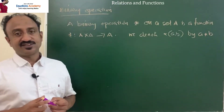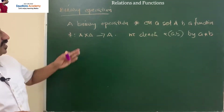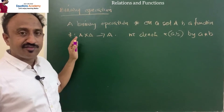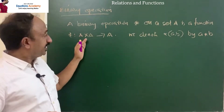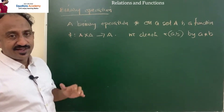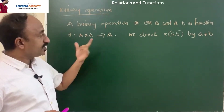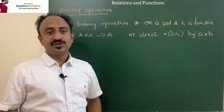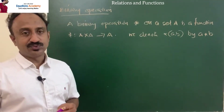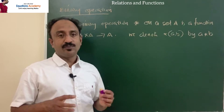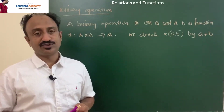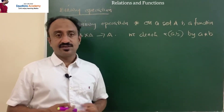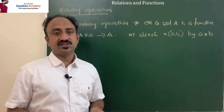Let us see what a binary operation is. A binary operation star on a set A is a function star from A×A to A, denoted a★b. Binary means 2 — an operation with two inputs. Addition, subtraction, multiplication, and division are examples.